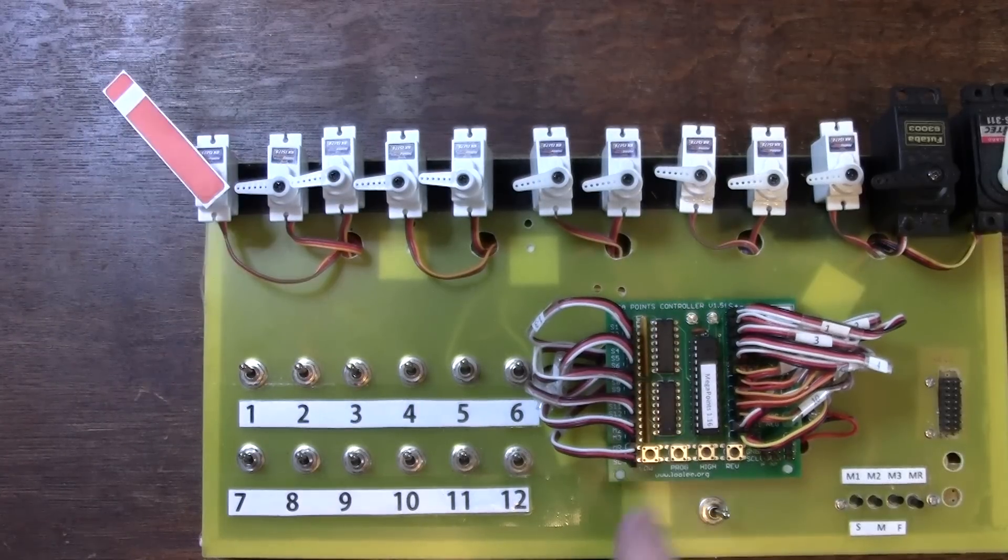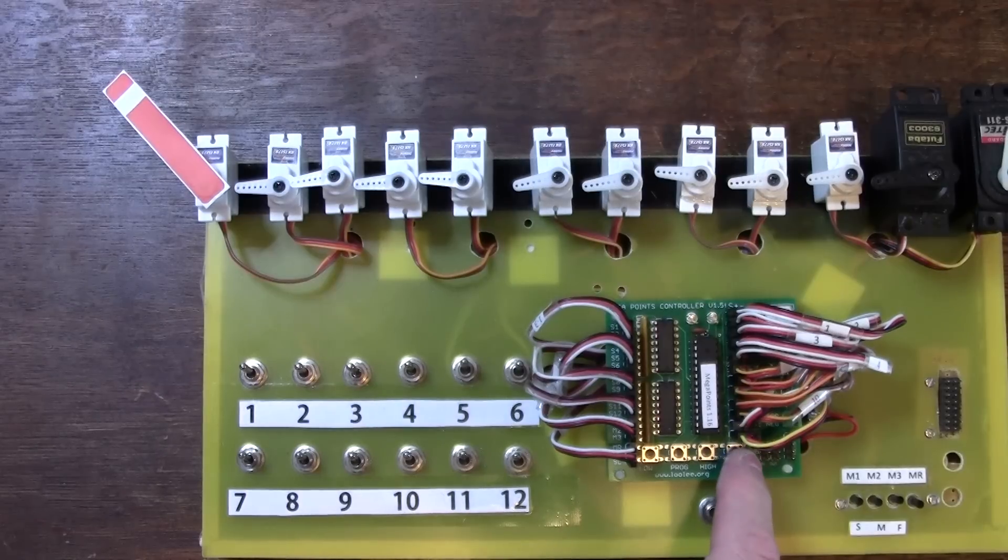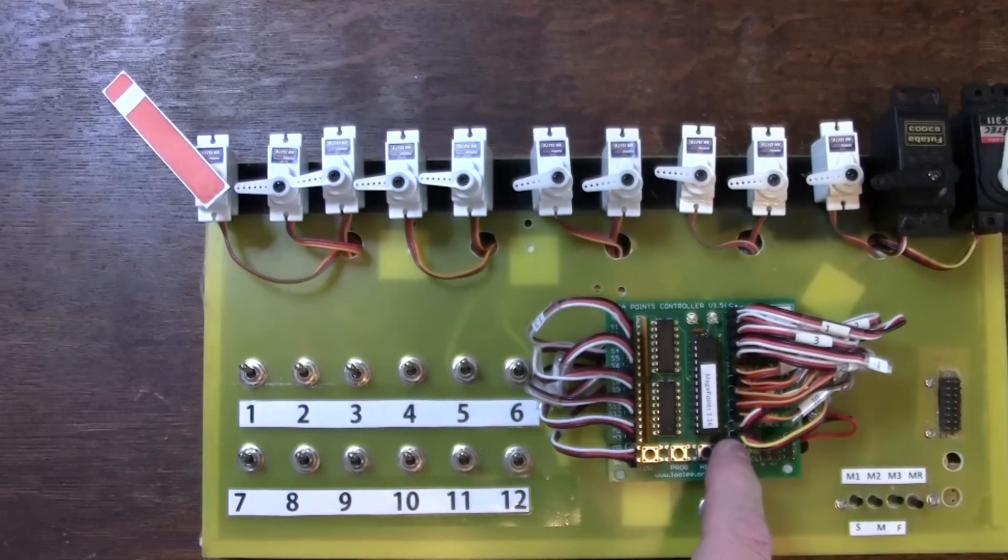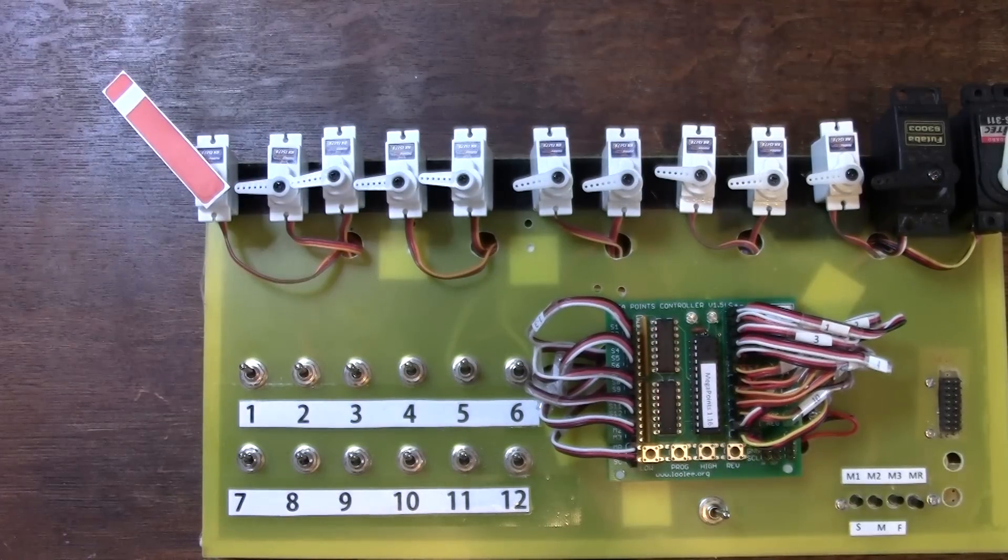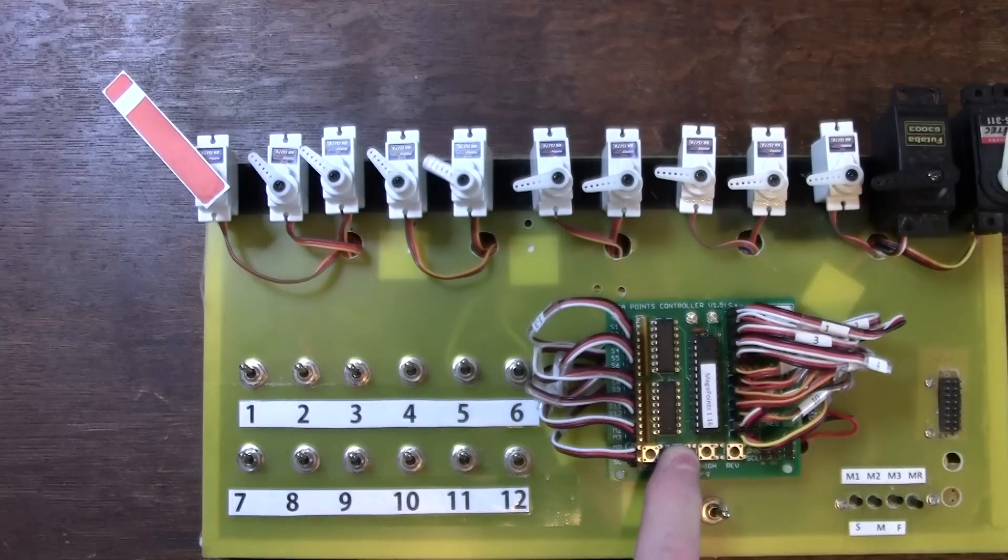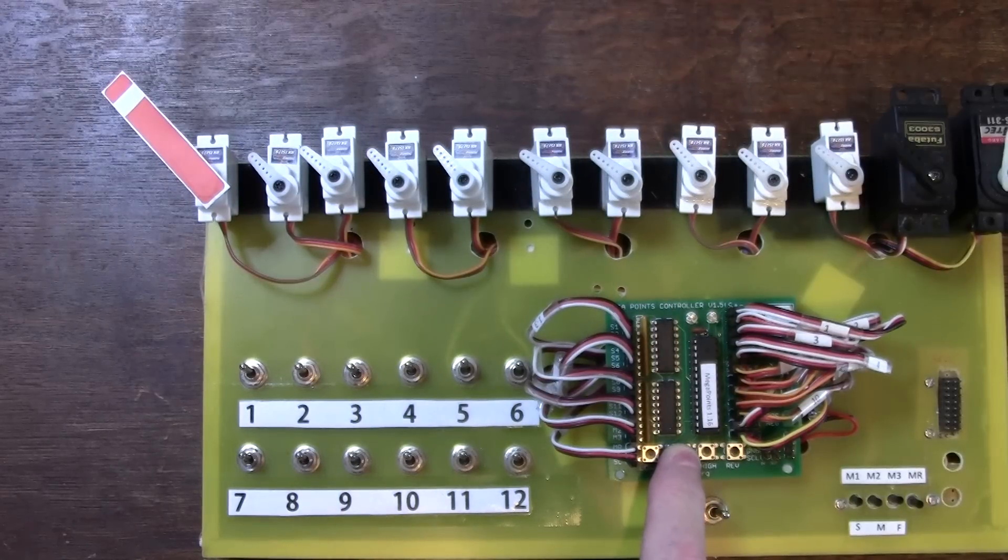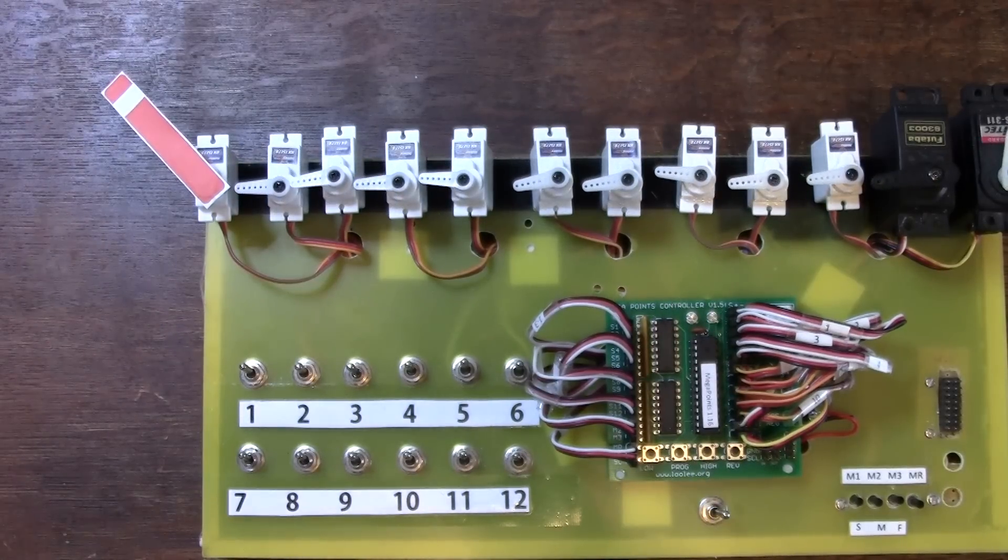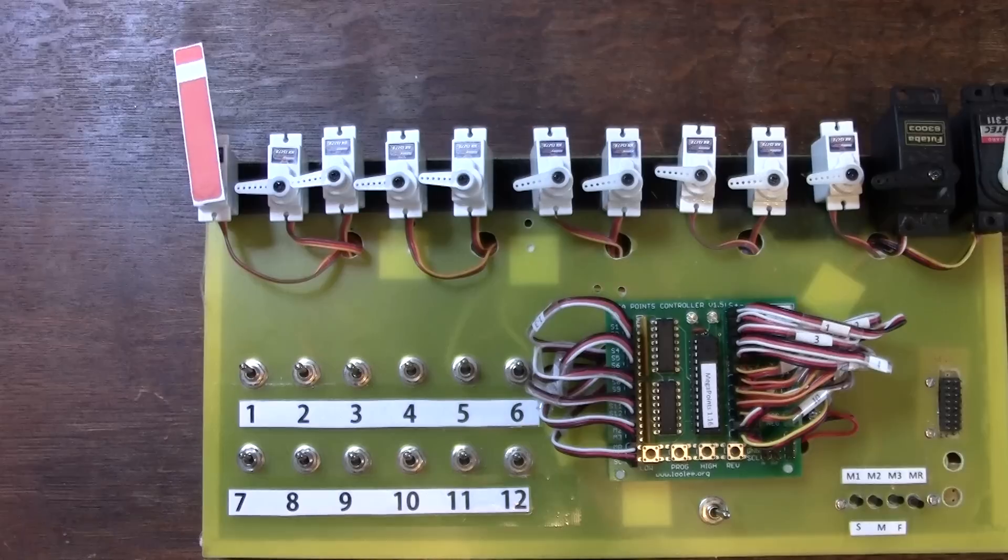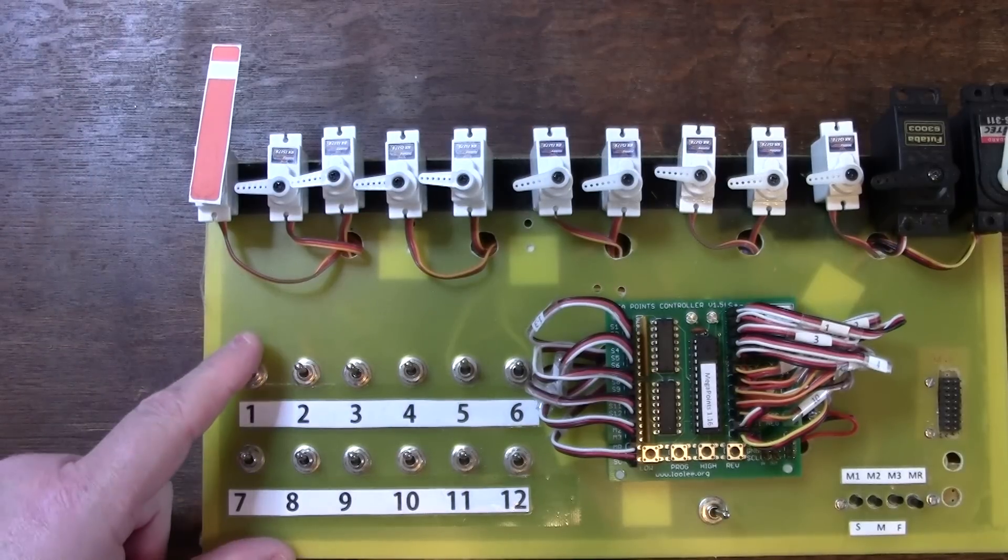And this time I'll press the reverse button until the reverse light flashes three times. Three flashes on the red light. So now I have the semaphore bounce set up on output number one.